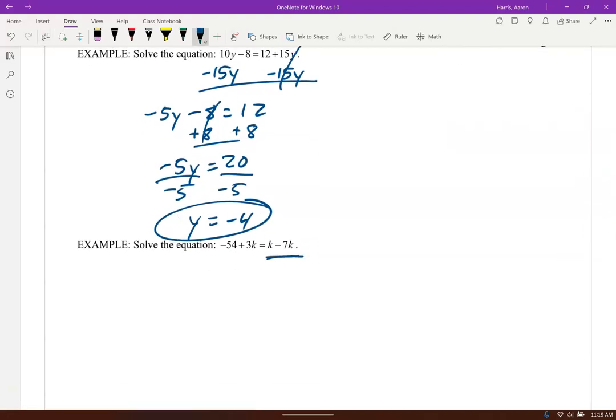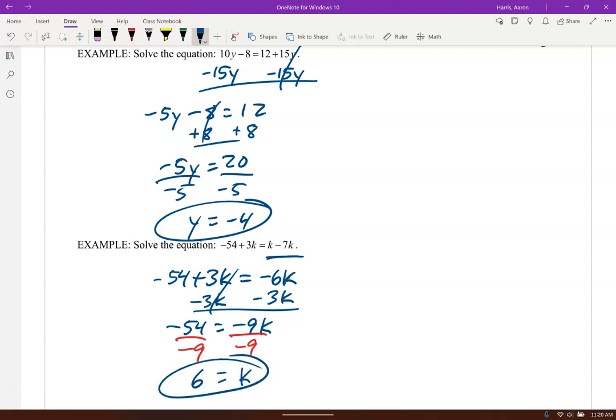Similarly here, except notice these are both like terms on the same side. So 1k minus 7k. 1 banana minus 7 bananas is negative 6 bananas or carrots or whatever. They're like terms. I can combine those. Now I'm going to get all my k's on one side. Let me subtract the 3k and take it over to the right-hand side. And then finally, let's go ahead and get rid of that negative 9. So we've got k equals 6.